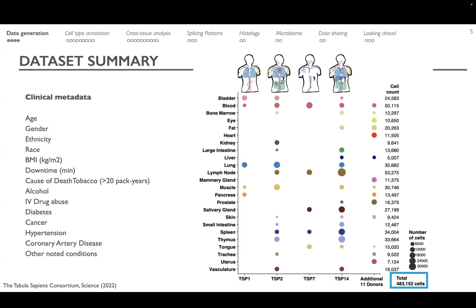For four donors we were able to collect a large number of tissues from a single donor, and we completed the atlas using data from an additional 11 donors. We also have access to clinical metadata — age, BMI, underlying disease — that helps build a layer of interpretability into the gene expression patterns we are seeing.